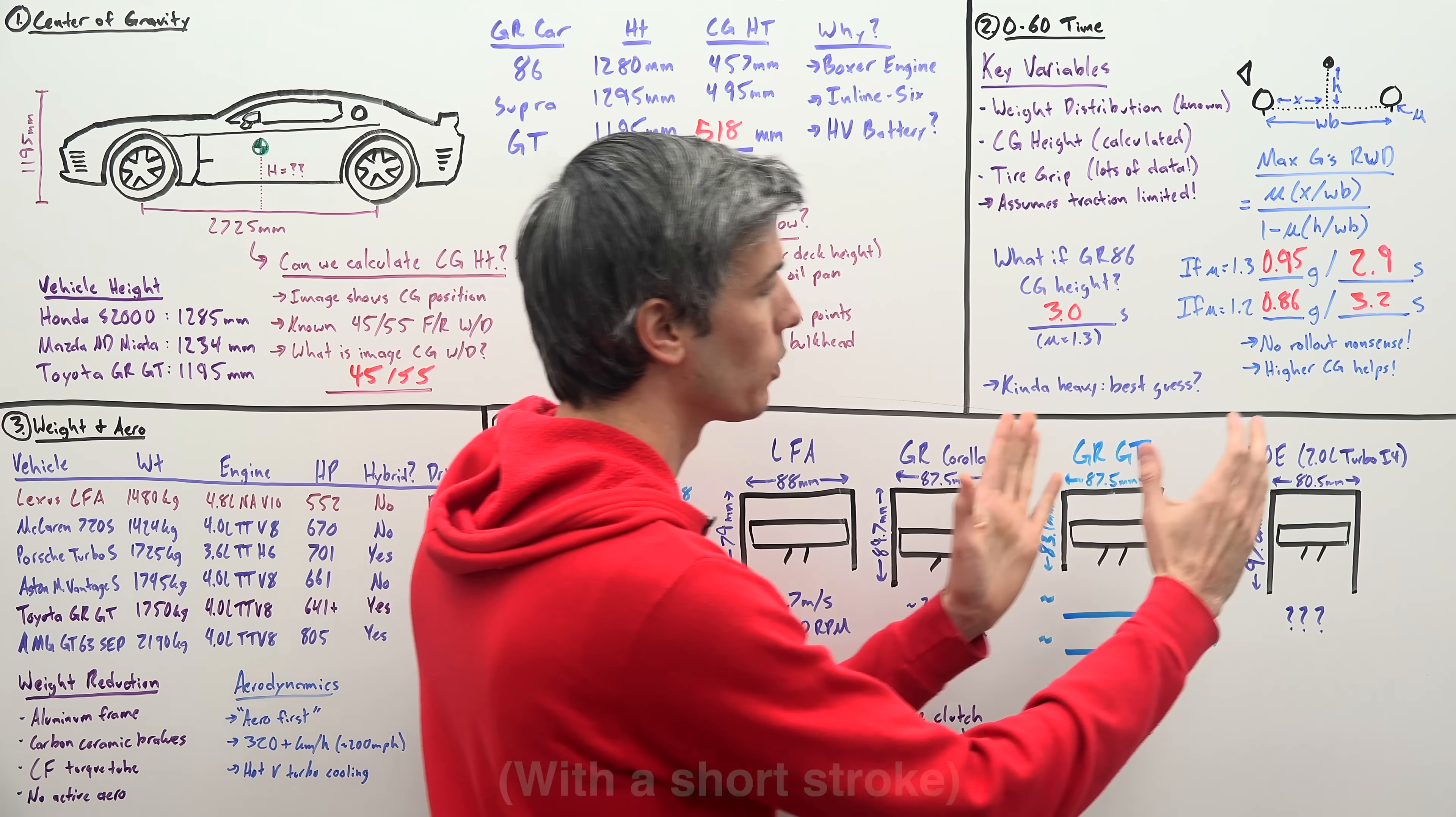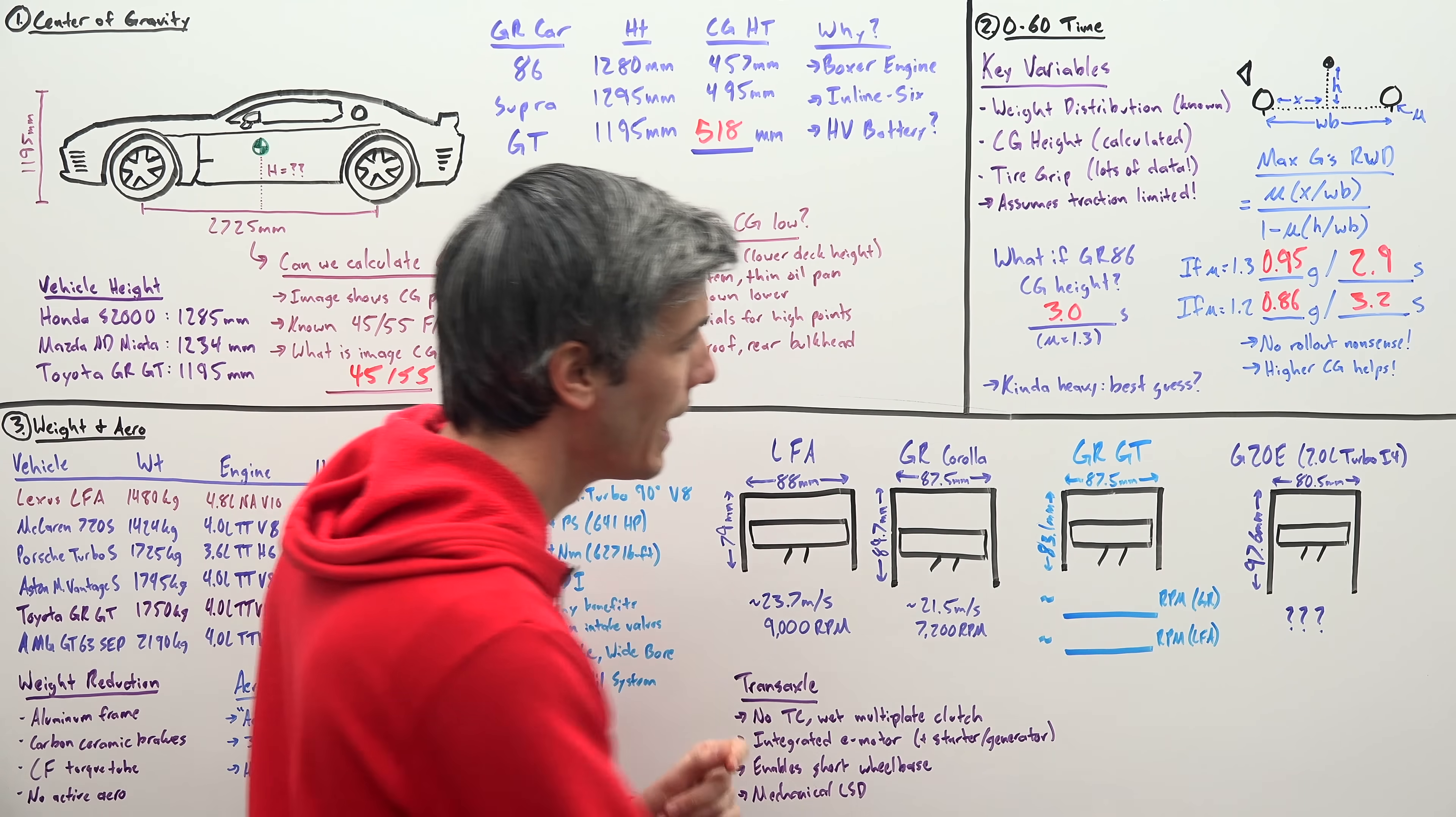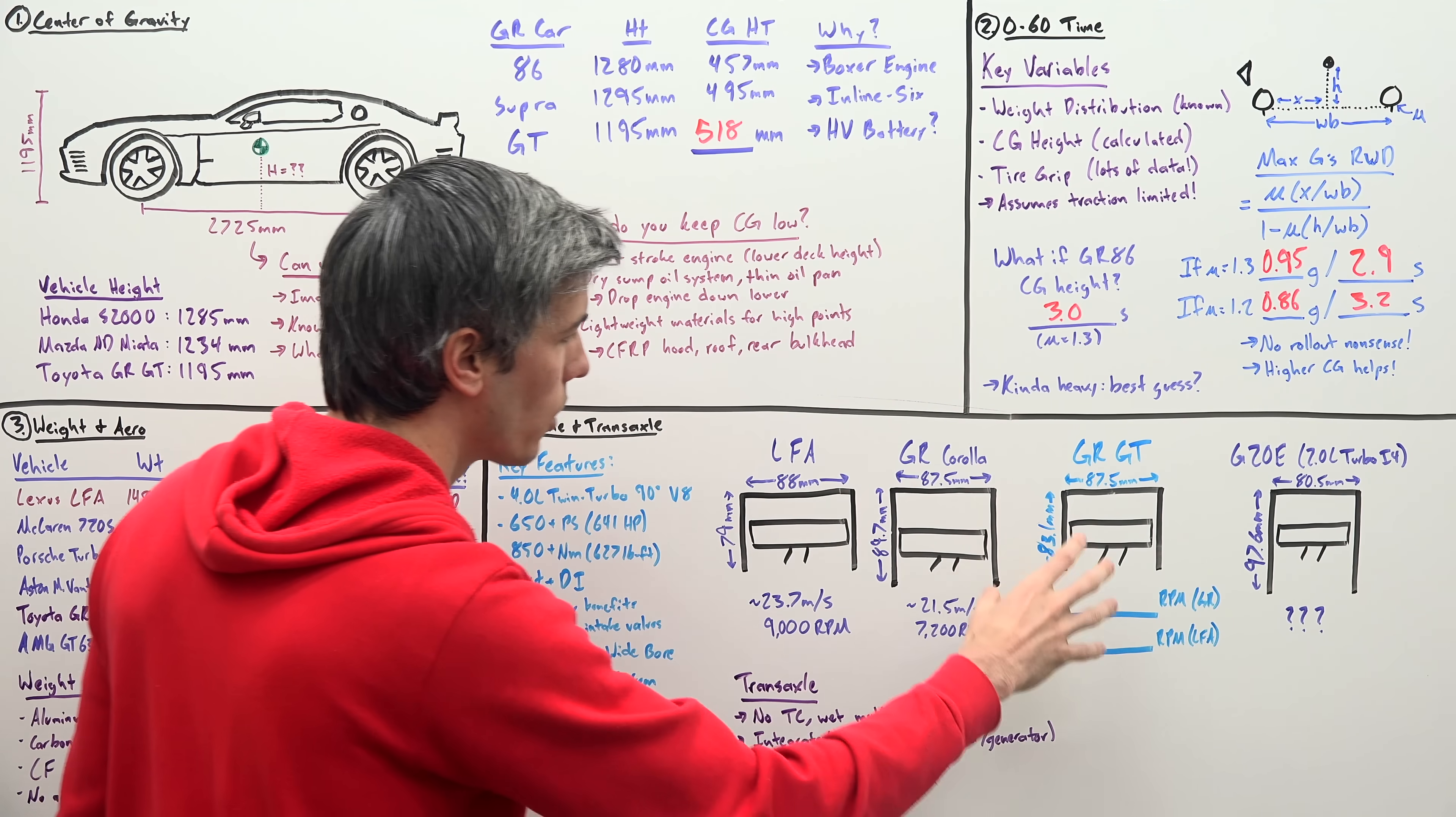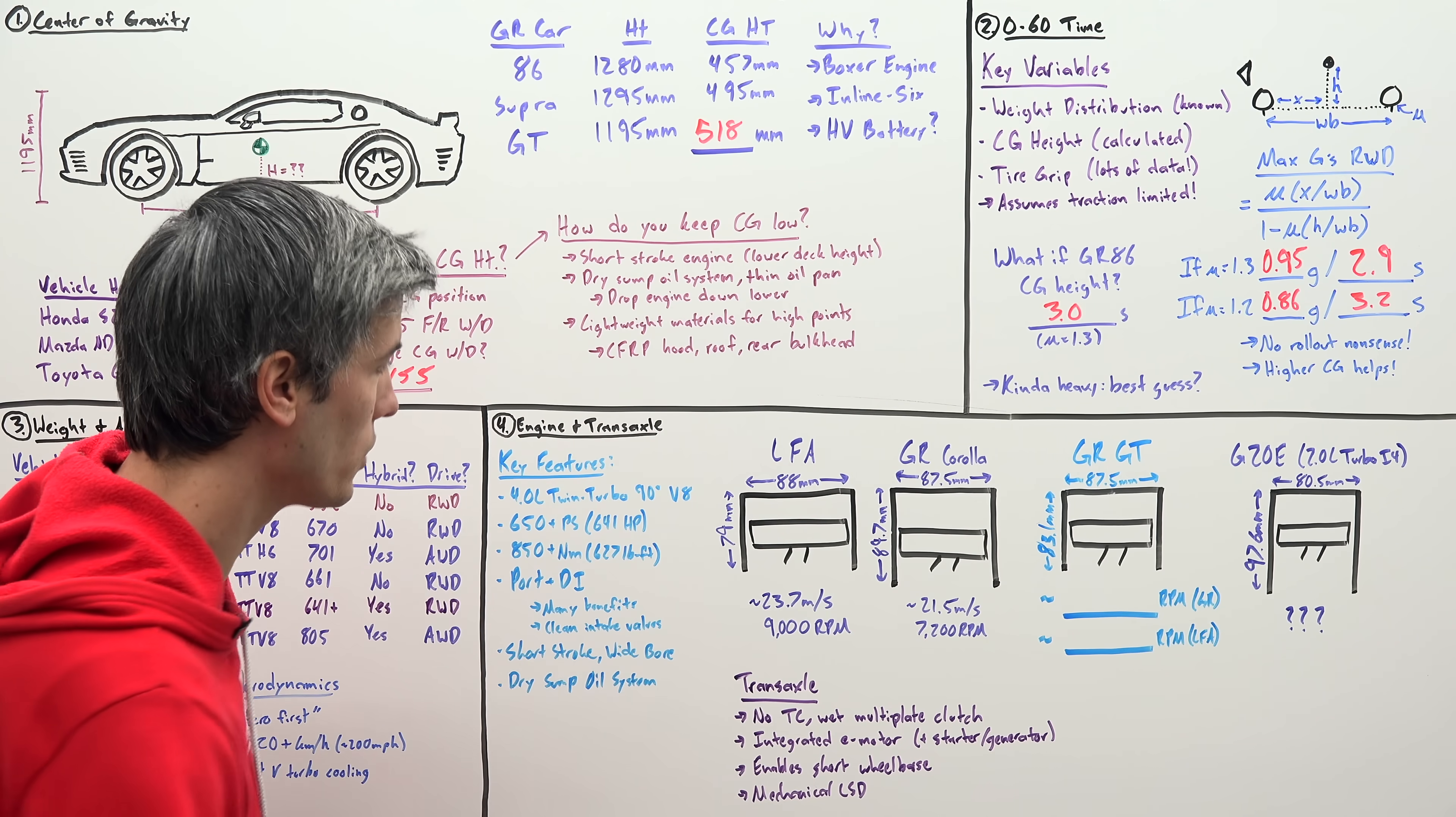It does not appear to be related to their new two liter turbo four, which could possibly be making up to 400 horsepower out of a little two liter, their G20E engine, which appears to have a much longer stroke and a narrower bore. So looking at the GR GT, one of the things I thought might be interesting is if we look at their piston speeds and the RPM that their other engines are able to reach, could we calculate perhaps where the red line is going to be for this GR GT?